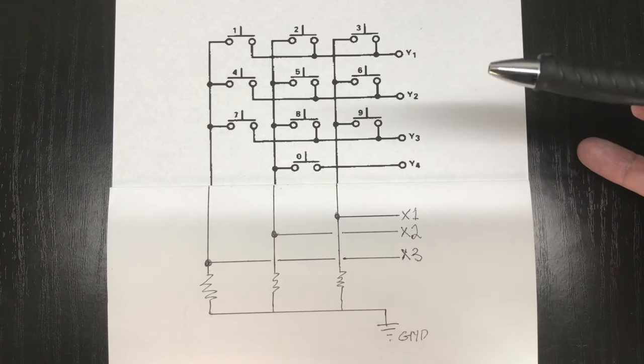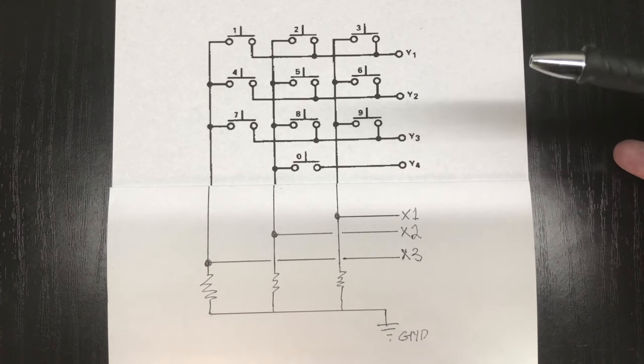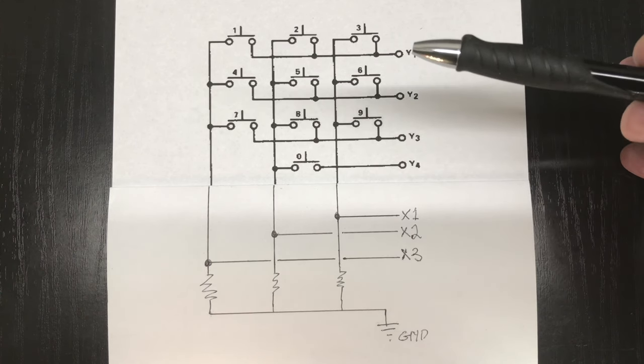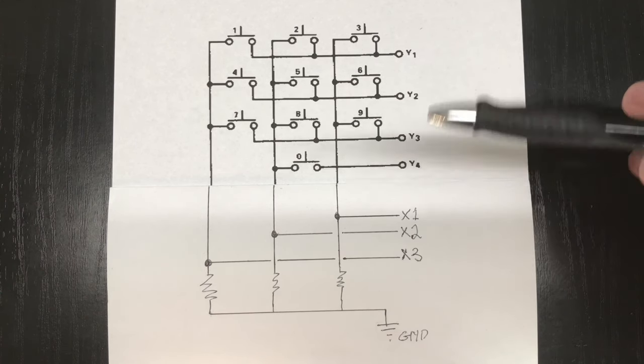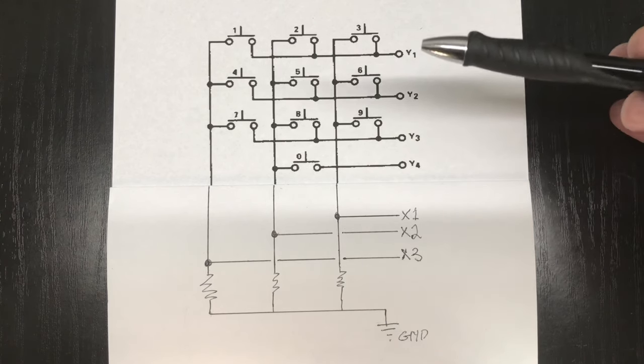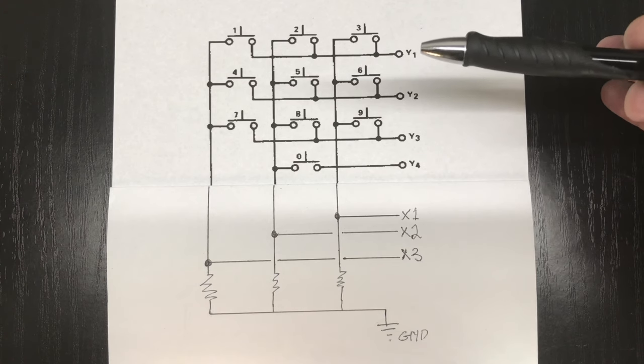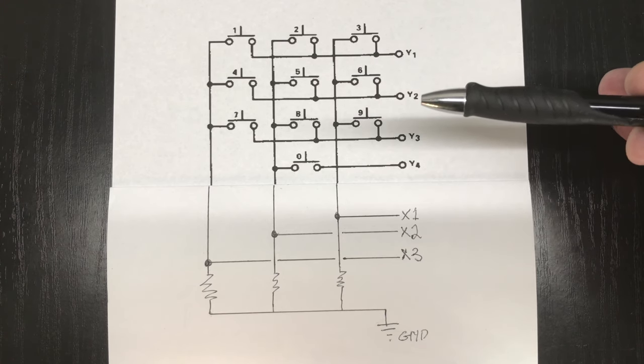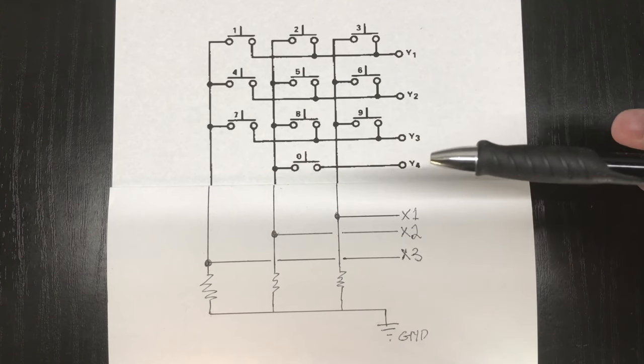So in your outer loop, in whatever language you're using, you would cycle through these y-lines, turning y1 on, then turn it off. Turn y2 high, then low, and then 3, and then 4.